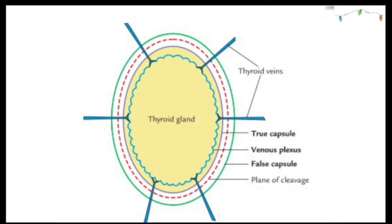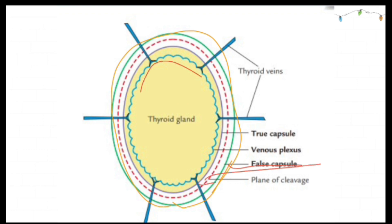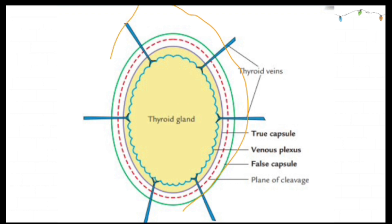Coming to the capsule — there is a true capsule which encircles the thyroid gland, shown in violet, and it is made up of the fibrous stroma of the gland. There is also a false capsule outside, shown in green. An important specialty is that the venous plexus lies deep inside the true capsule. Therefore, during thyroidectomy, the true capsule is also removed. The false capsule is made up of the pre-tracheal fascia, which extends to the hyoid bone.